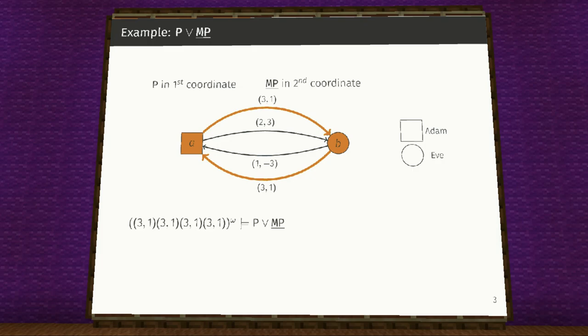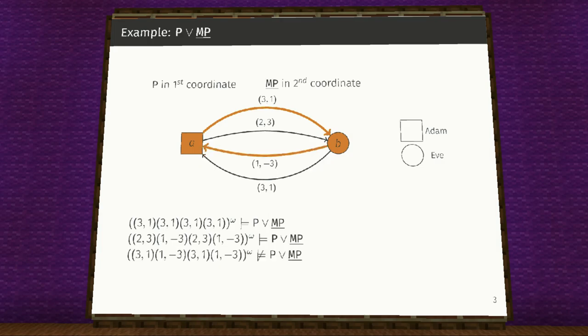This run satisfies parity or mean payoff because it satisfies mean payoff with infimum in the second coordinate. Some other runs of this game are here. The second run satisfies parity or mean payoff with infimum because it satisfies parity in the first coordinate.